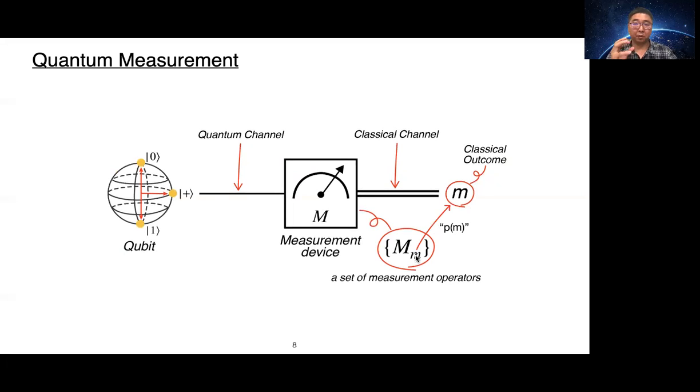Each measurement operator projects onto the quantum state and then returns measurement outcome little m with the probability p of m. So the predictions of outcomes through the measurement are probabilistic.